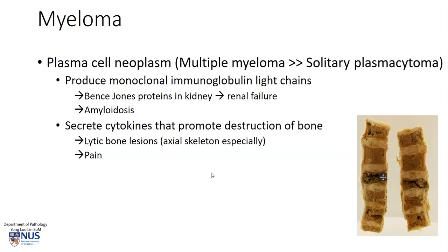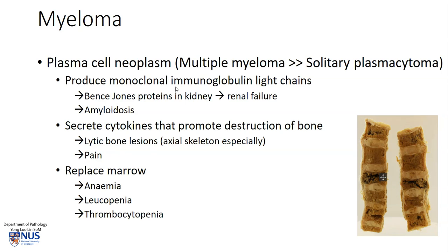Lytic lesions also occur in the skull, the ribs, and the pelvis. Sometimes in advanced cases, they can affect even the soft tissues and lymph nodes. There can also be accompanying pain and hypercalcemia, and if there is involvement of the vertebral column, there may also be resulting compression fractures. Because the bone marrow is replaced by these masses of abnormal plasma cells, the other cell lines can also be depleted, so there may be anemia, leukopenia, and thrombocytopenia with the accompanying clinical manifestations.